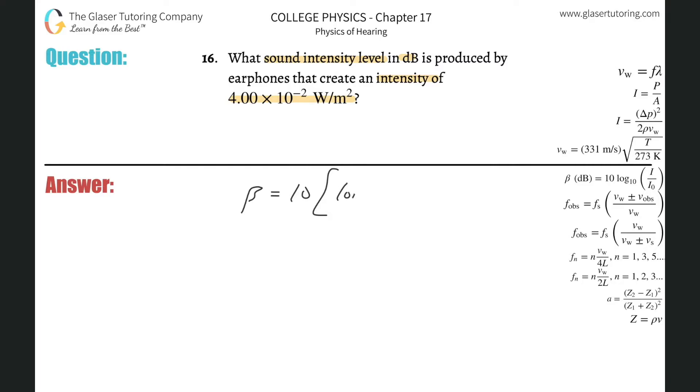Now instead of I sub 0, just plug in the 10 to the negative 12, because that's a constant value. So now all I really need to do is just plug in for this.